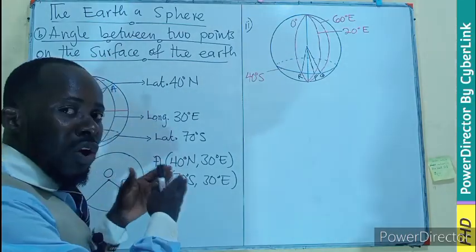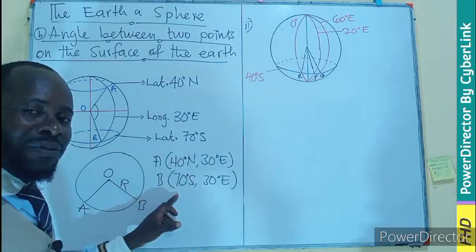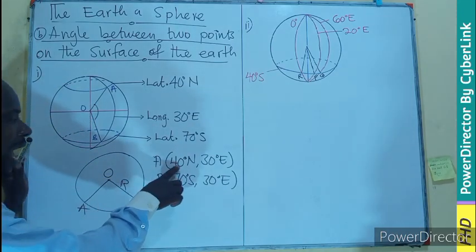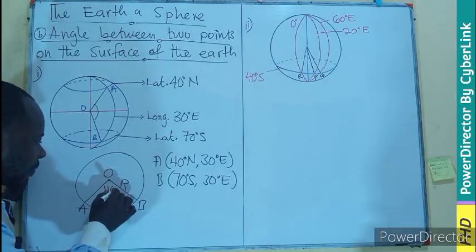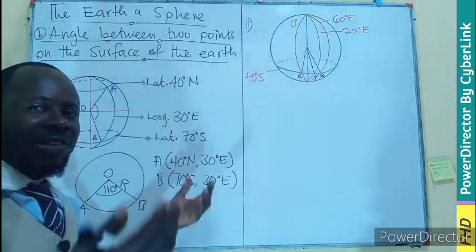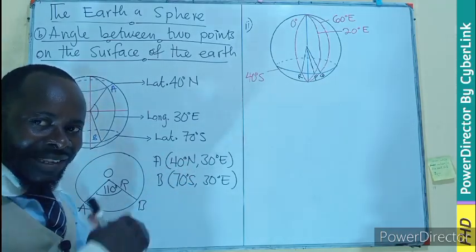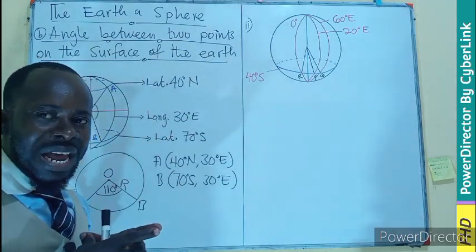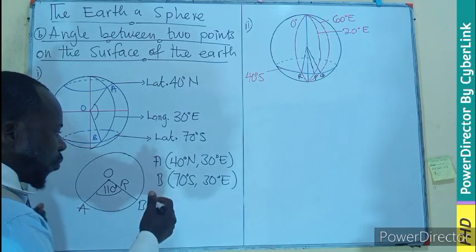Since they share a common longitude, we discard it and concern ourselves only with the latitudes. To find the angle common to both points, we add the two angles: 40 plus 70 gives us 110 degrees. We add them because they are on opposite sides — one is north, one is south. If they were on the same side — north and north, or south and south — we would subtract instead.